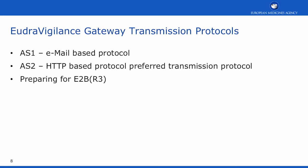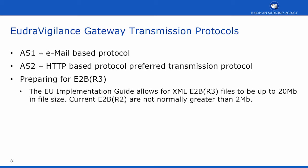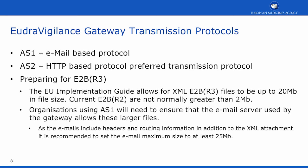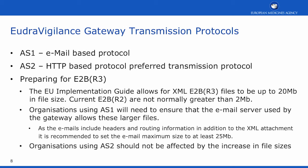When preparing for E2B R3, it should be noted that the EU implementation guide for E2B R3 allows files to be up to 20MB in size. The current E2B R2 files are not normally greater than 2MB. This means that organisations currently using AS1 will need to ensure that their email servers allow for these larger files to be exchanged. As the emails used in AS1 include headers and routing information in addition to the XML attachment, it is recommended to set the email maximum size to at least 25MB. Organisations using the AS2 protocol should not be affected by these increases in file size.